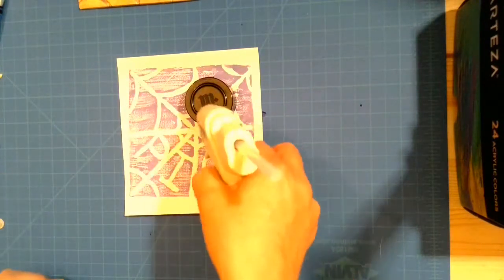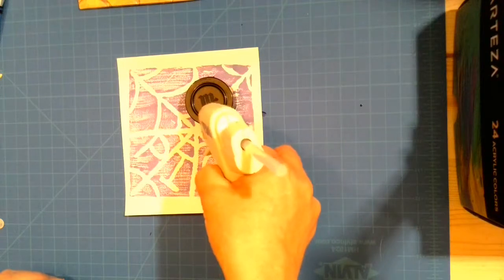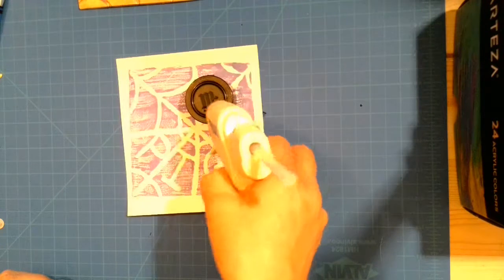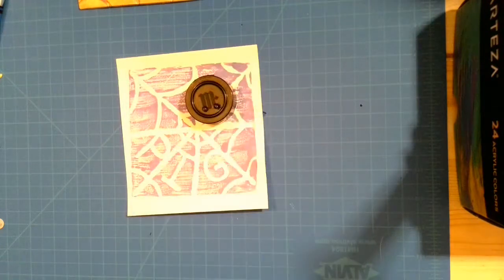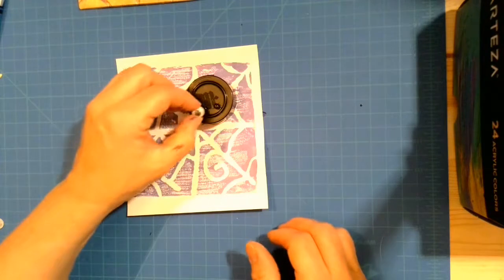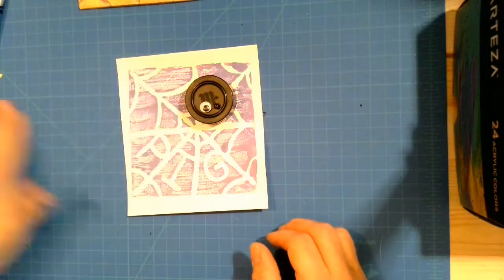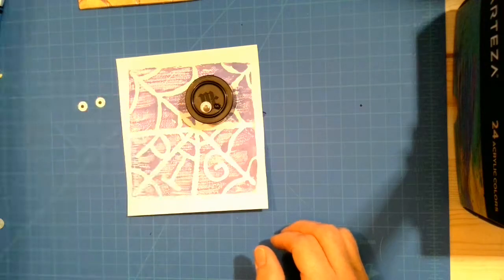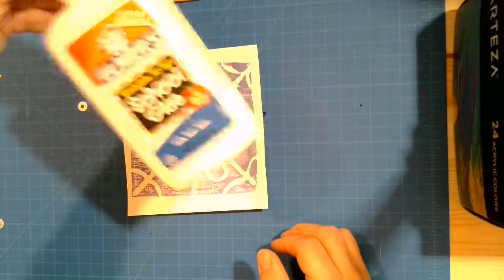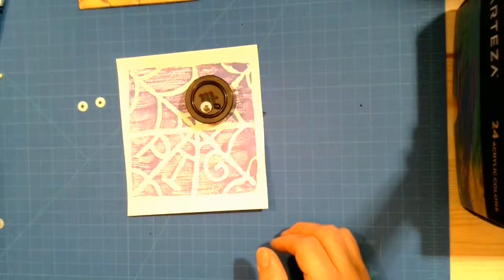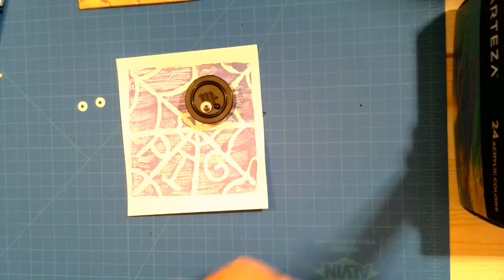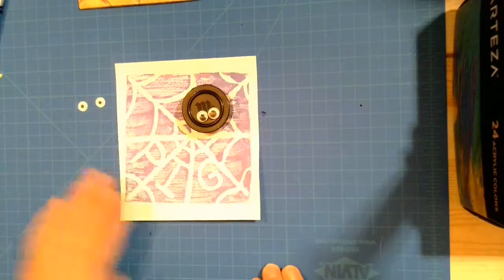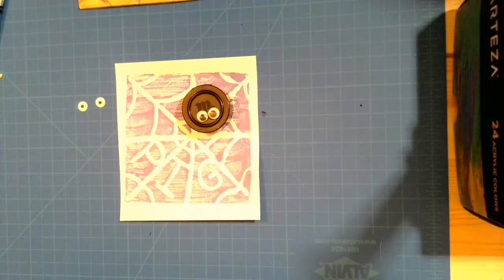The next thing I'm going to do is glue on my eyes. I am using a hot glue gun for my googly eyes. If you choose to do that at your house make sure you have a parent help you with that. Otherwise if you use your paper eyes like the ones that I showed you earlier, you should be able to glue those on with just basic Elmer's glue.